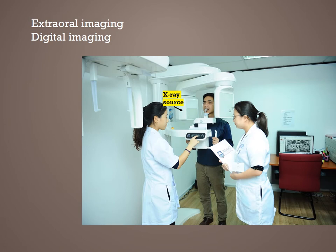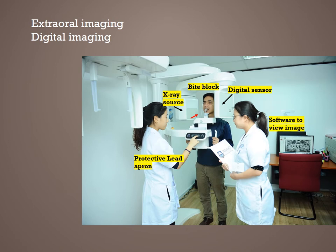You still have the x-ray source and a digital sensor to capture the image. The patient is positioned in the center between the source and the sensor, wearing a protective lead apron. There is a bite block on which the patient bites to stabilize themselves in the center of the rotation, and you have software to view the image. Multiple things are needed to bring about the panoramic image seen on the computer screen.